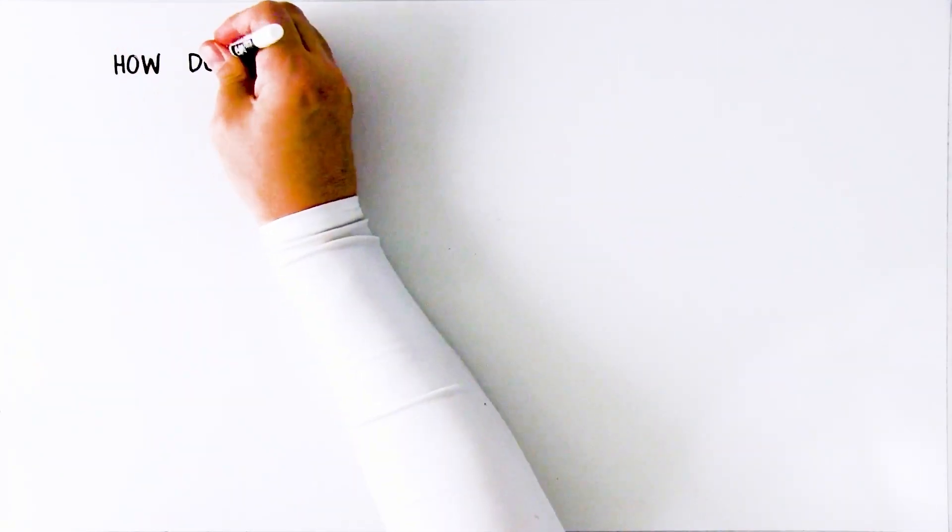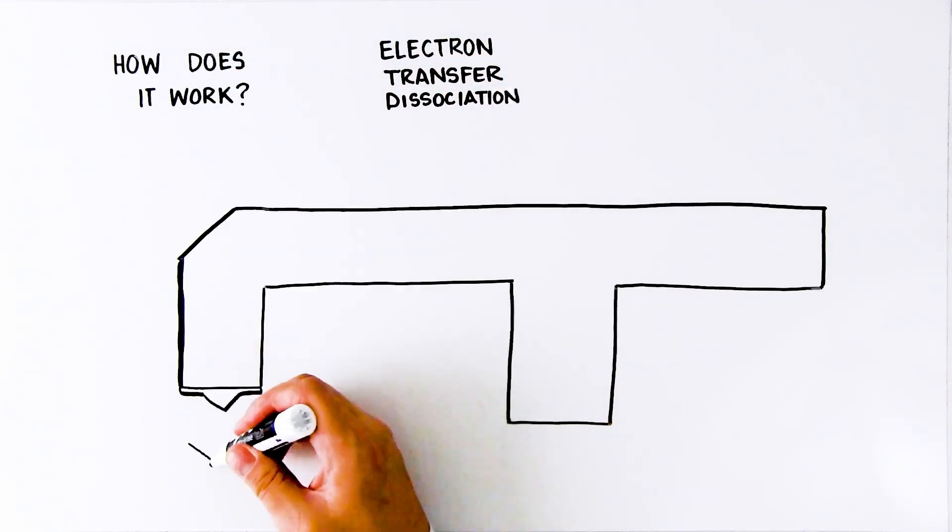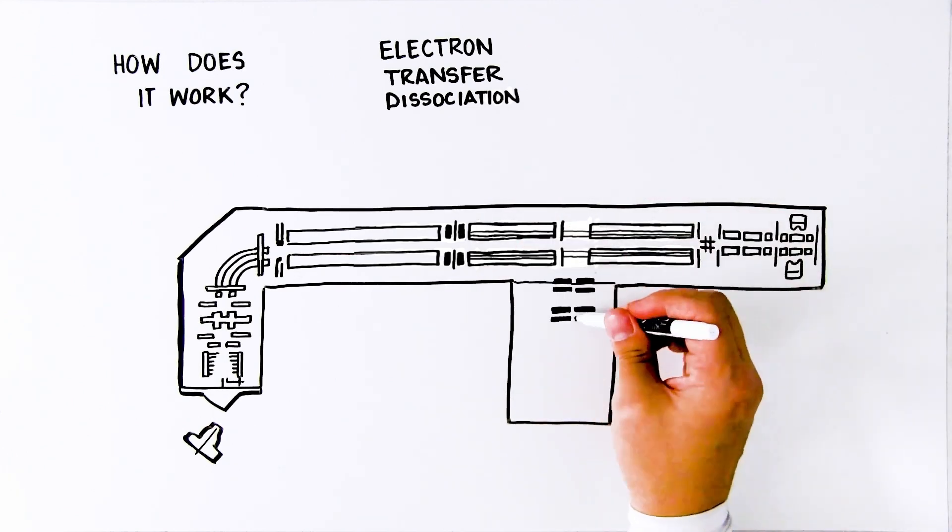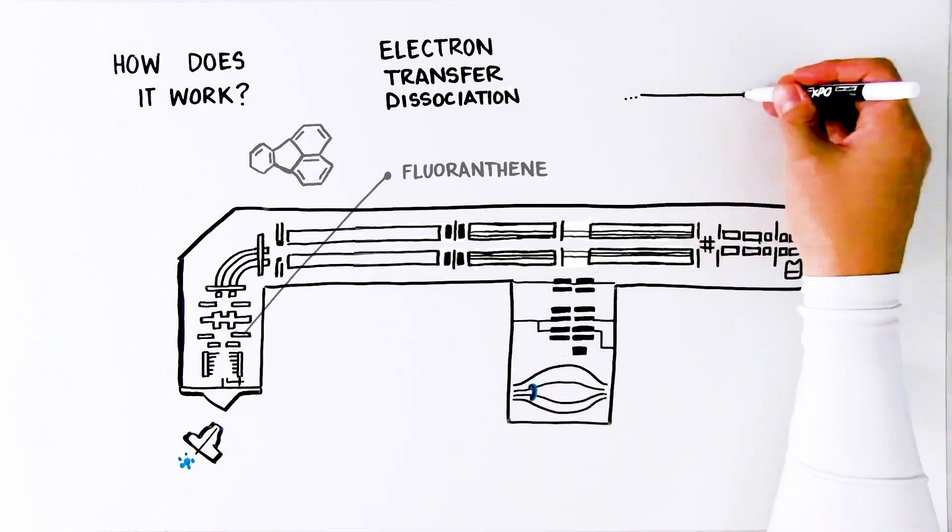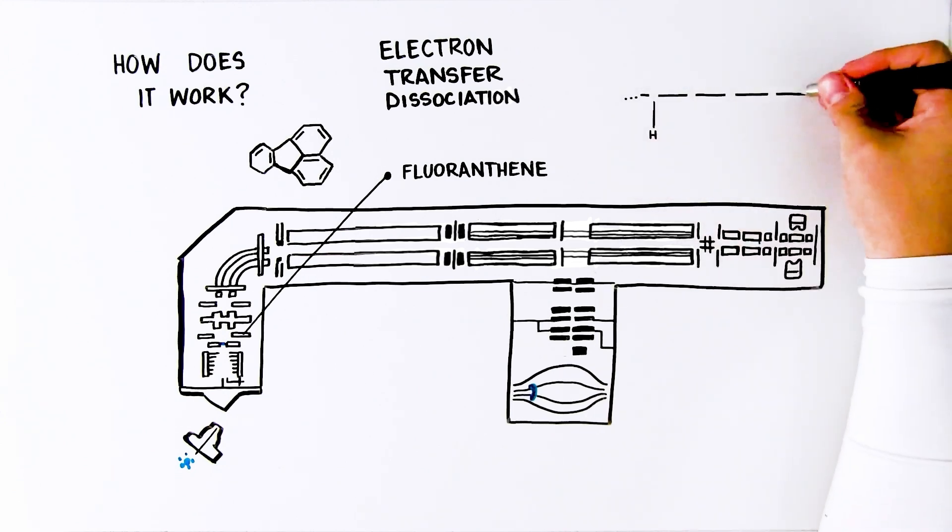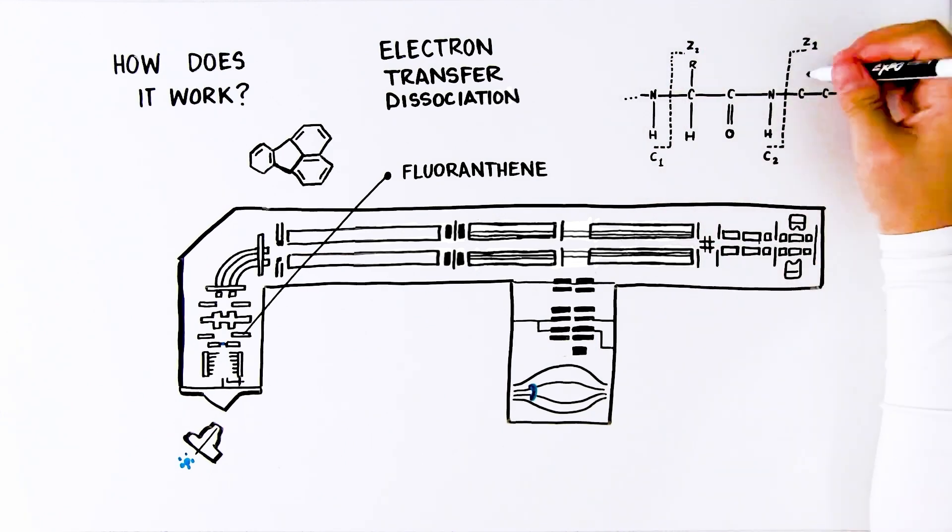How does it work in tribrid mass spectrometers? ETD is an ion-ion reaction that occurs in the high-pressure cell of the dual-cell linear ion trap assembly between a precursor cation and florentine radical anions. ETD results in primarily C and Z-type fragment ions and provides rich, detailed data without fragmenting essential molecular bonds.